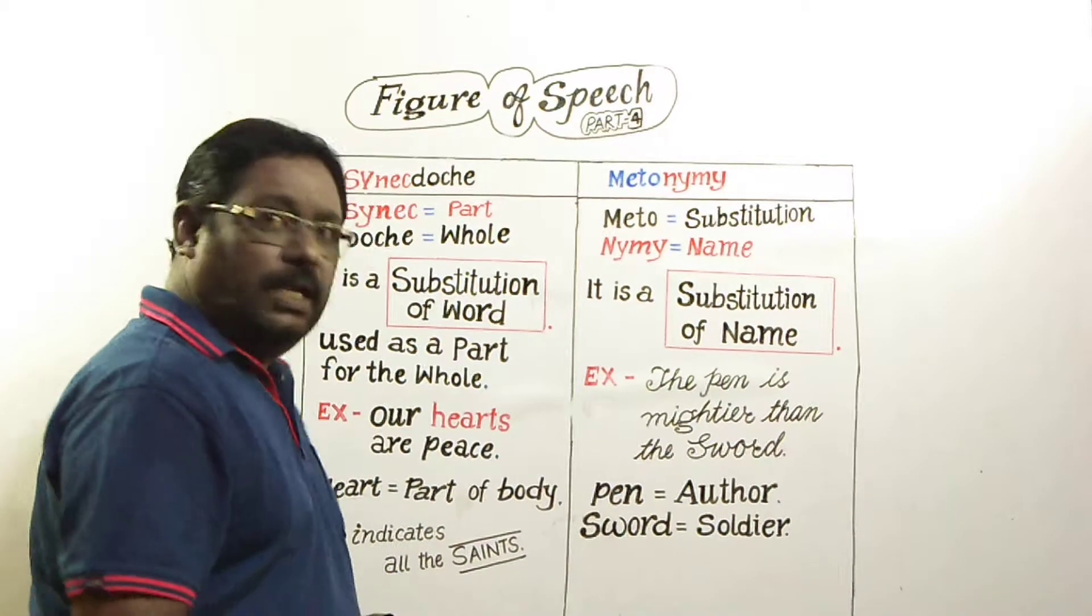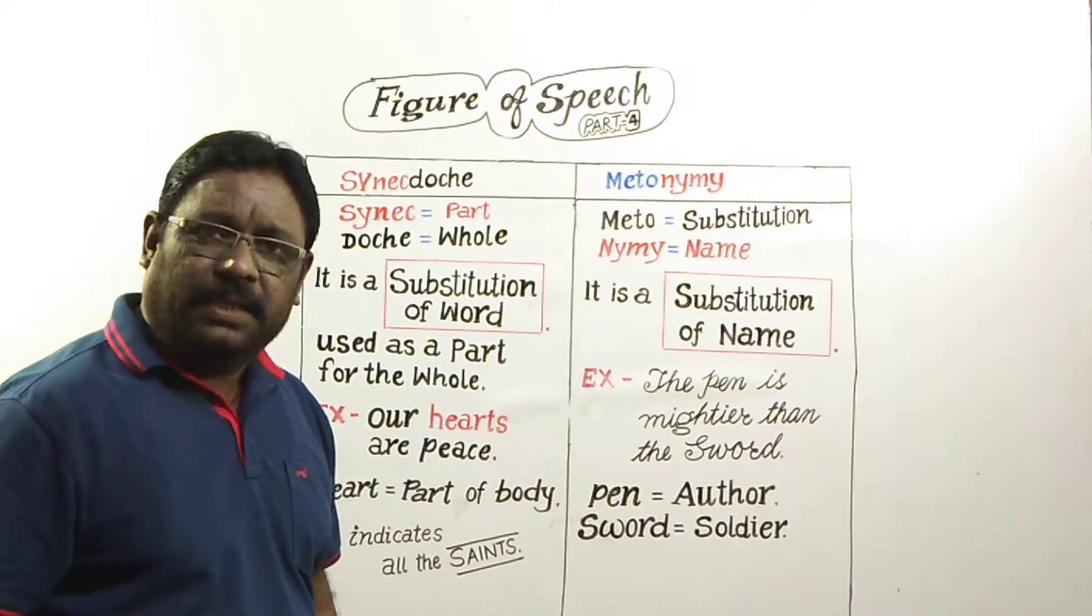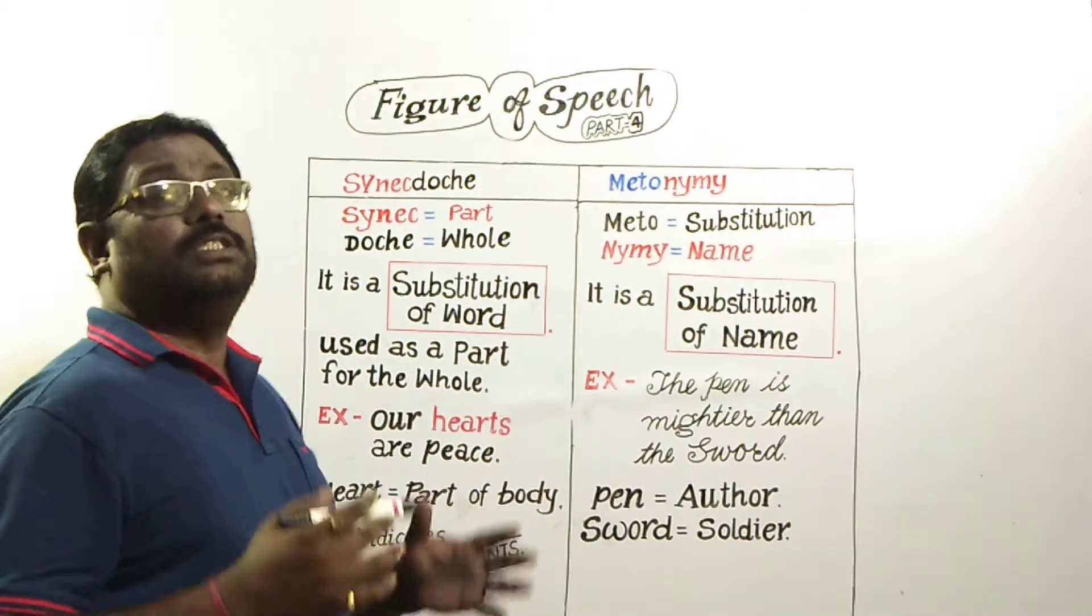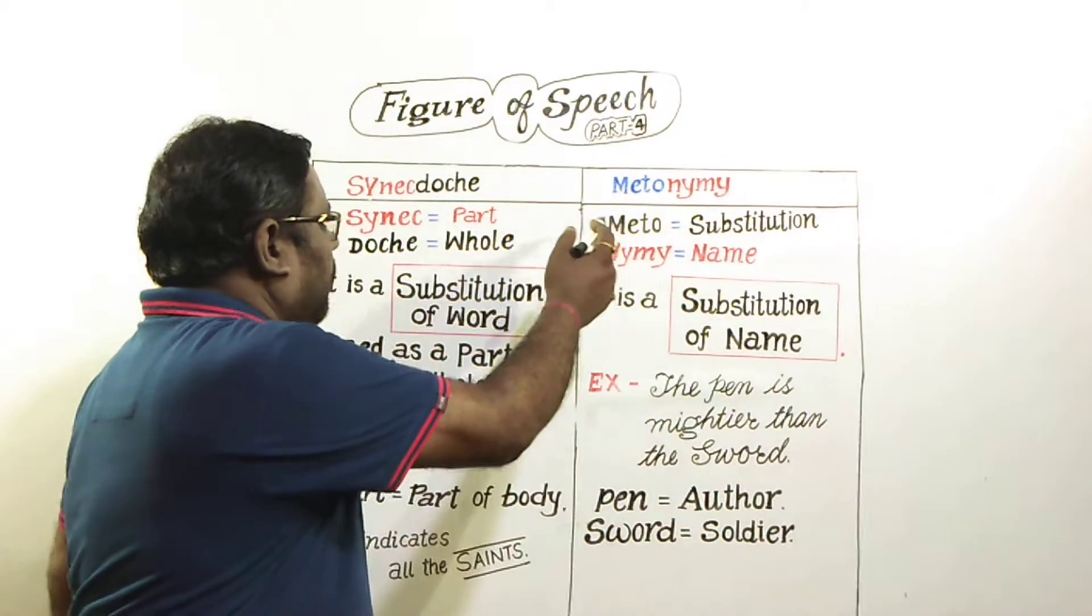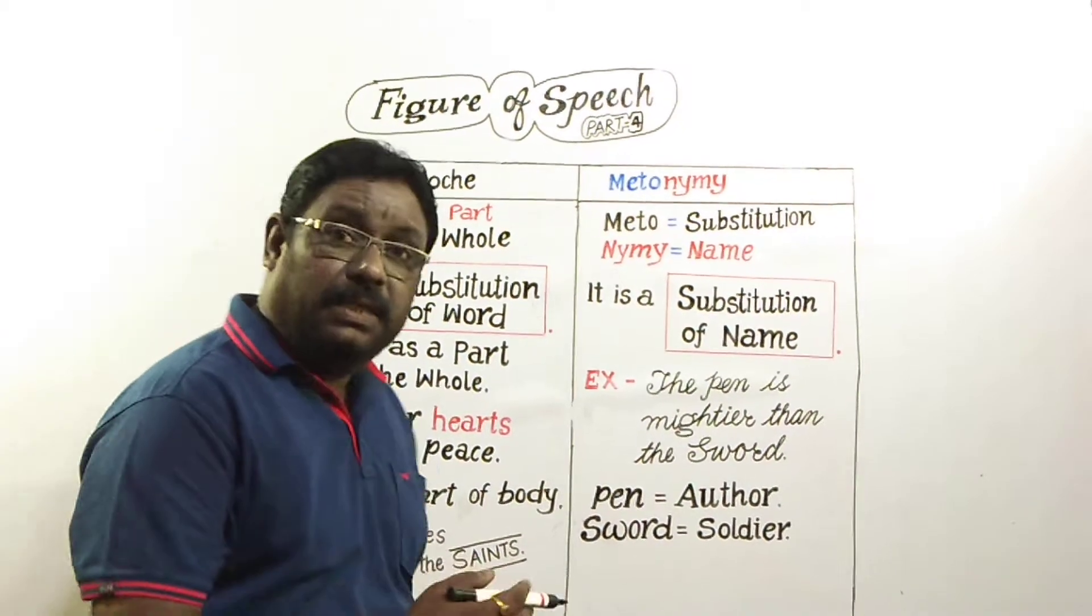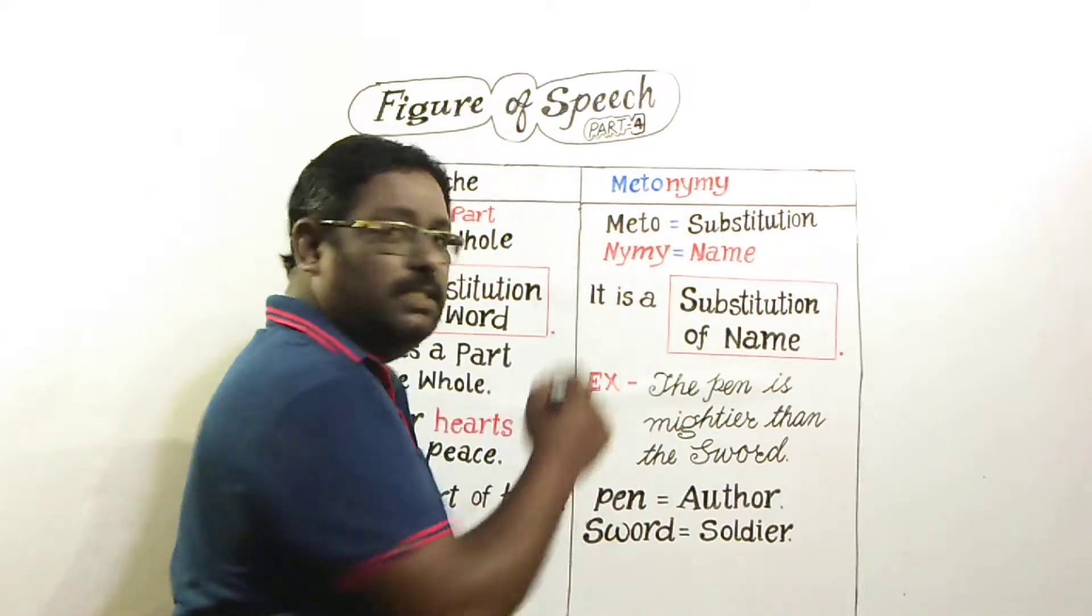Now look at Metonymy. Metonymy means image or symbol. Meta means substitution and nym means name.